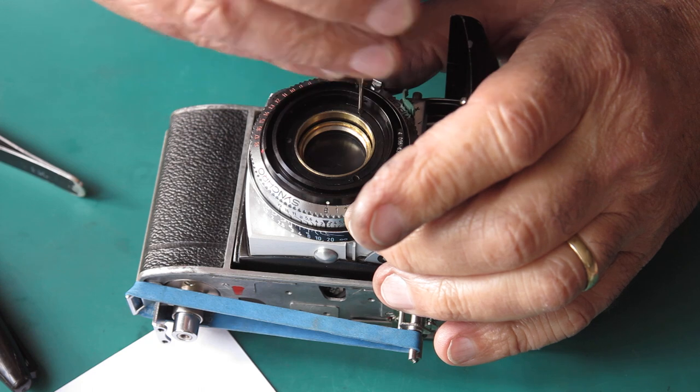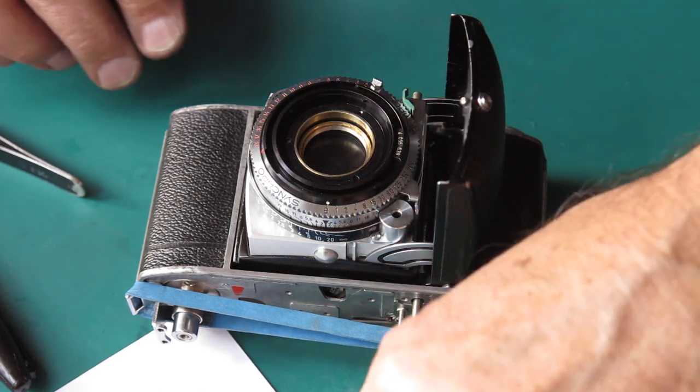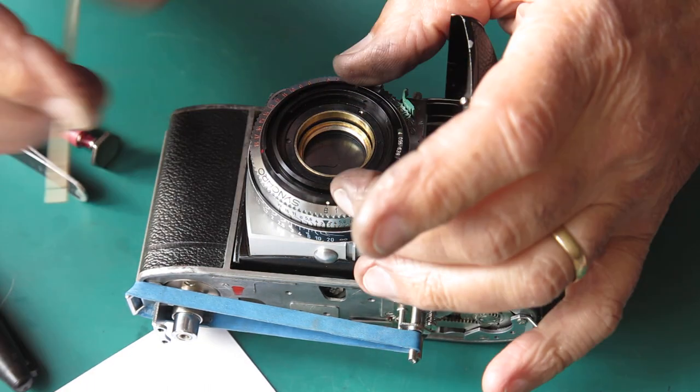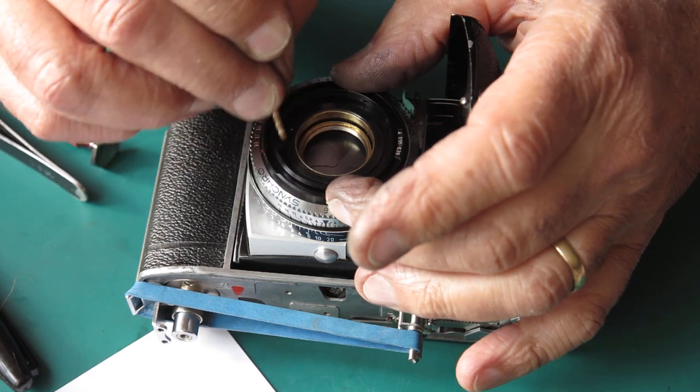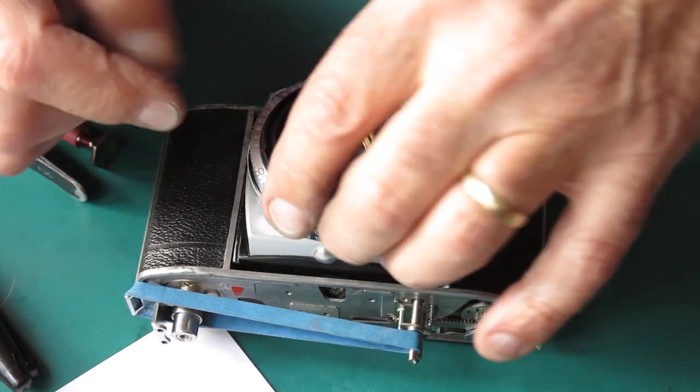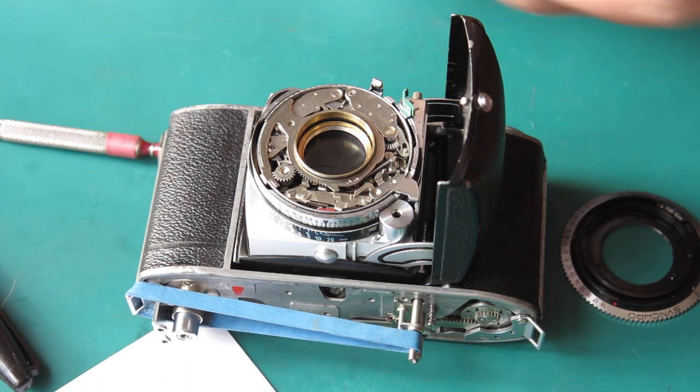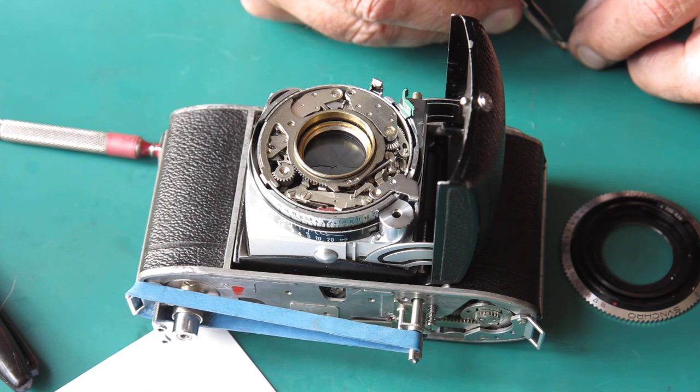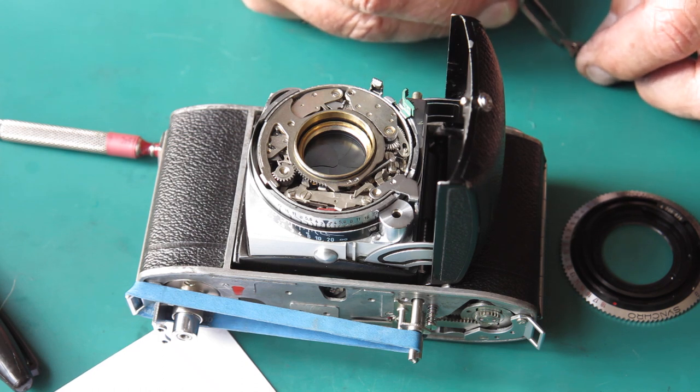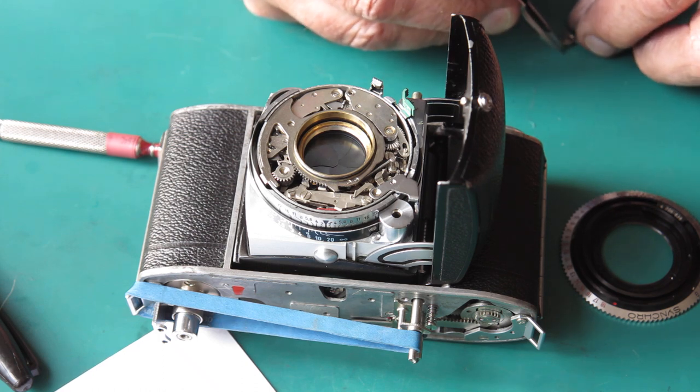Now I've noticed I forgot to put something in here. And it's the little component that prevents you from being able to depress the shutter release if the shutter is not actually cocked. It's easily forgotten and you wouldn't notice it in most circumstances.